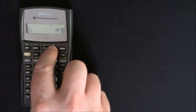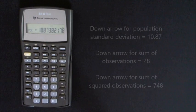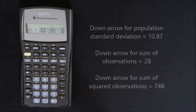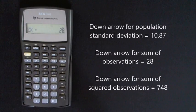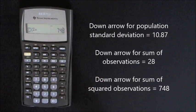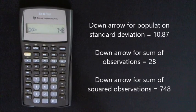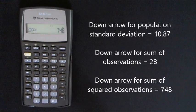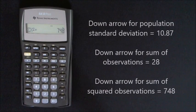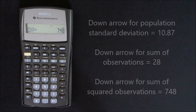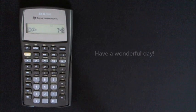Now we weren't looking for these numbers in this example, but the calculator will give you a few extra numbers. If you arrow down, then it gives you the population standard deviation. It gives you the sum of the different observations, and it also gives you the sum of the squares of the different observations. We weren't looking for these numbers in this question, but it may be helpful for you to know that. Thank you for watching. I hope you found this video helpful. Have a wonderful day.